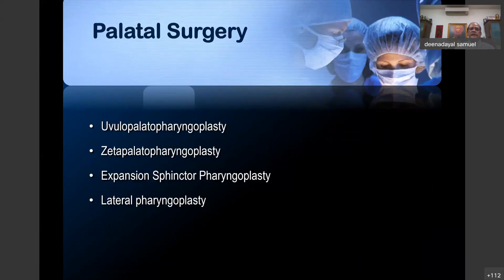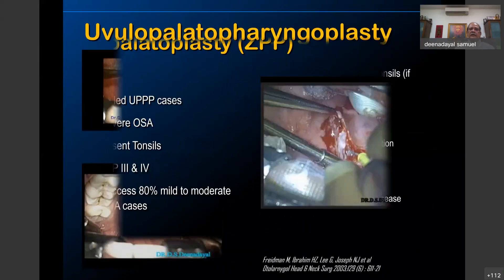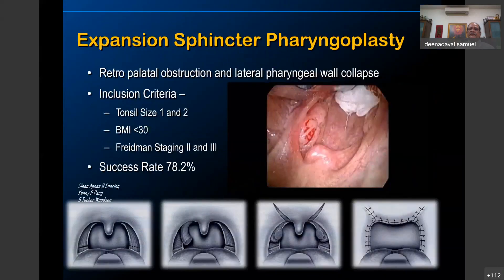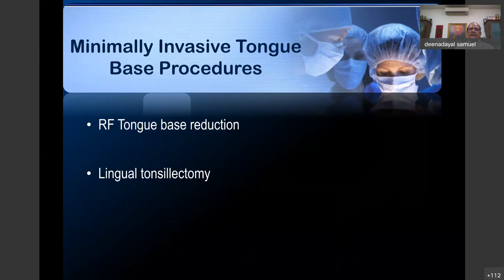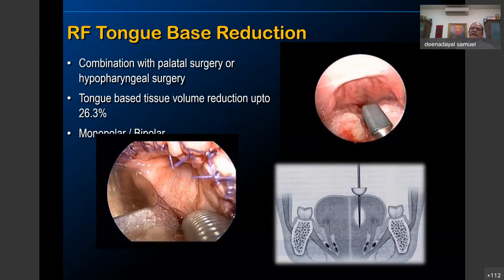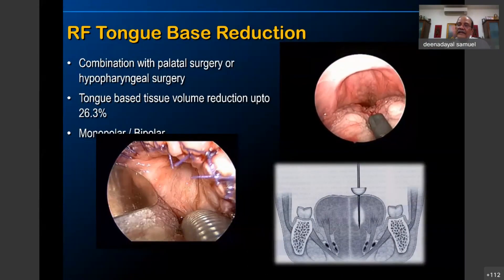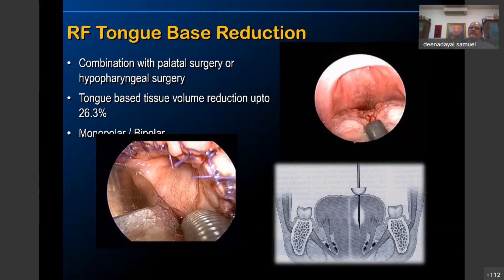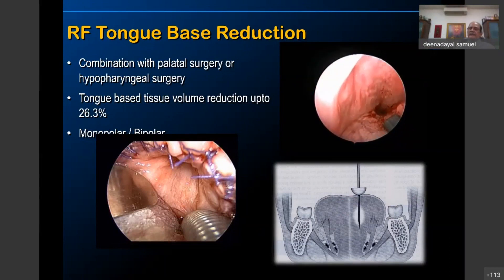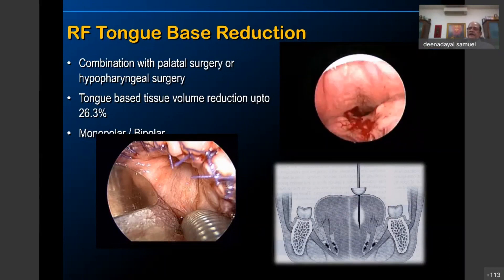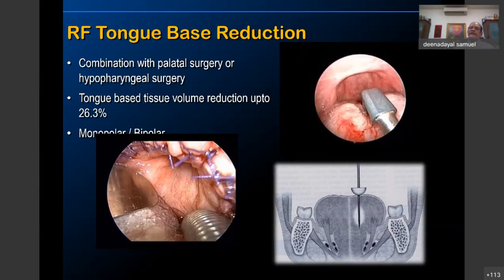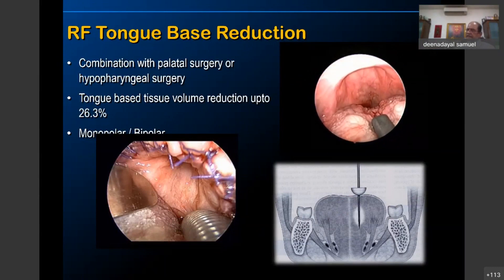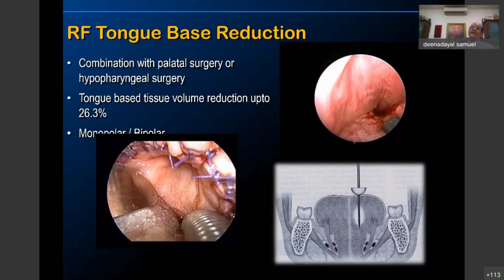This is an expansion sphincter arm procedure. This shows the tongue base done under local anesthesia — with only a local injection. This is a second application to the tongue base where a zeta palatoplasty was also done. With 2 to 3 applications, the tongue base definitely shrinks, comes anteriorly, and the retrolingual space is increased.